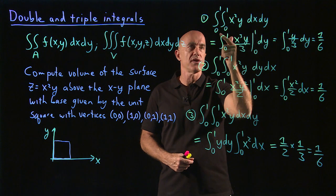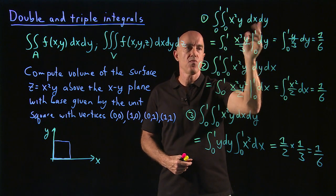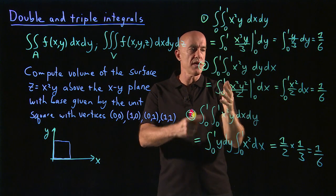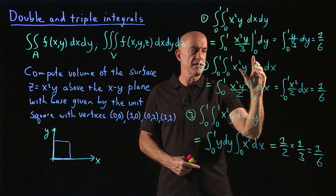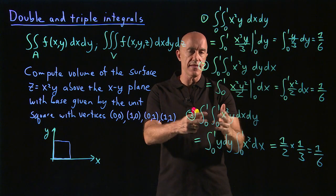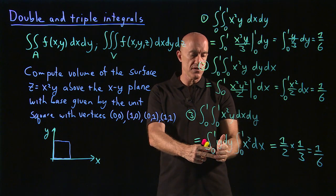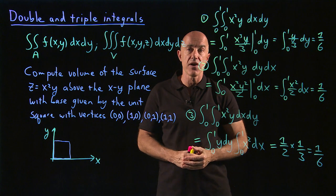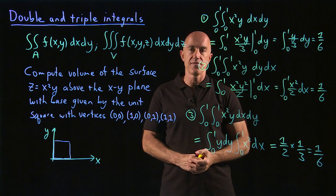To do this type of integral, all you do is you do one at a time. So you integrate x first, keeping y fixed, and then you integrate y. And the second one, I integrated y first, keeping x fixed, and then I integrated x. And then in the third one, I show you that this type of integral is actually factorable. So it factors into two single variable integrals. In all cases, we get the answer of 1/6.